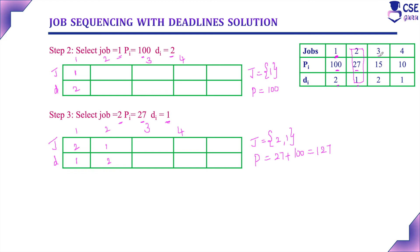Next, consider the third job (job 3) with deadline 2. In the first unit of time we assign job 4 (profit 27), and in the second unit of time we assign job 1 (profit 100). Job 3 also needs to be completed by the second unit of time, but that slot is already taken by a higher-profit job. Since its profit is also lesser, we cannot assign job 3 and must neglect it.